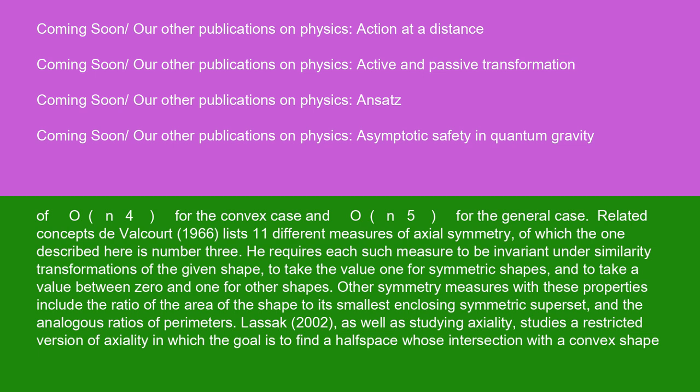Related concepts: De Valcourt (1966) lists 11 different measures of axial symmetry, of which the one described here is number 3. He requires each such measure to be invariant under similarity transformations of the given shape, to take the value 1 for symmetric shapes, and to take a value between 0 and 1 for other shapes. Other symmetry measures with these properties include the ratio of the area of the shape to its smallest enclosing symmetric superset, and the analogous ratios of perimeters.